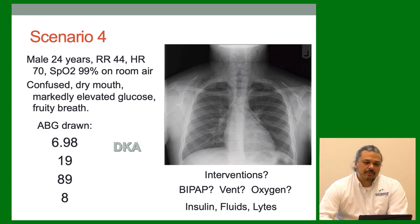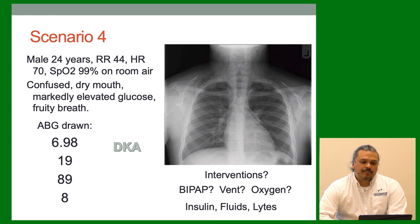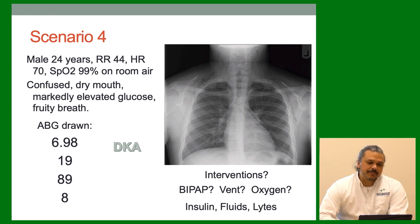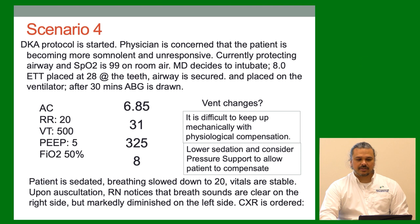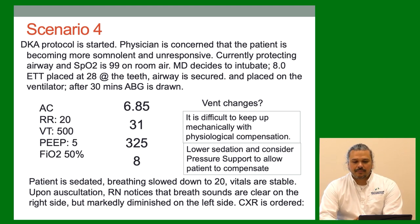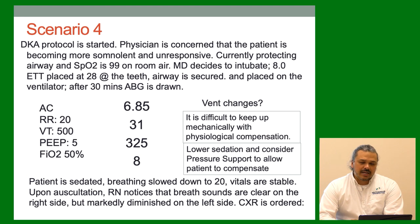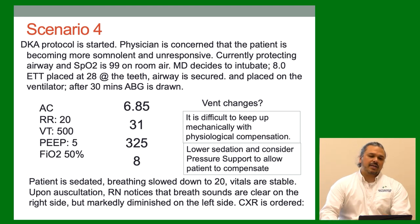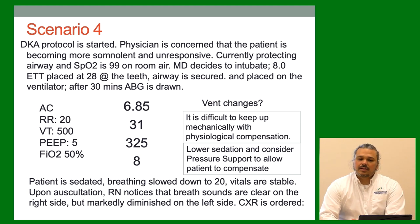The doctor is concerned because the patient has become more somnolent and unresponsive but is currently protecting his airway, SAT 99% on room air. The doctor doesn't feel great and wants to intubate. Patient is intubated, 8.0 tube placed at 20 at the teeth, airway secured, placed on the vent. After 30 minutes an ABG is drawn: 6.85 / 31 / 325 / 8. This patient actually got worse. Why? It's difficult to keep up with a DKA patient when they're compensating — mathematically it's not possible to put them on the vent and blow off CO2 the way they were doing. Typically when we intubate a DKA patient, the next gas is usually worse.